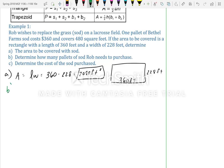Alright, part B, determine how many pallets of sod Rob needs to purchase. So, it tells us that we have the area covered, which we need, so area covered, and then we need to know how much comes on a pallet. So, area covered with 1 pallet.